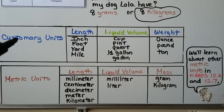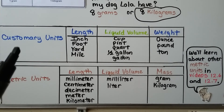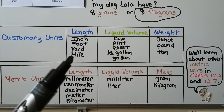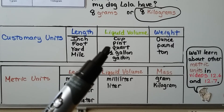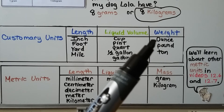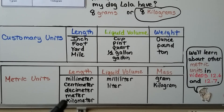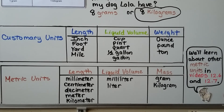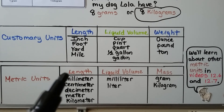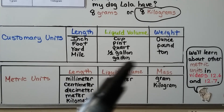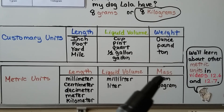So we have customary units of measure and metric units of measure. For customary units of length: inch, foot, yard, and mile. For liquid volume: cup, pint, quart, half gallon, and gallon. For weight: ounce, pound, and ton. For metric units of length: millimeter, centimeter, decimeter, meter, and kilometer. For liquid volume: milliliter and liter. For mass: gram and kilogram. Notice that customary units use weight, while metric units say mass — so what's the difference between weight and mass?